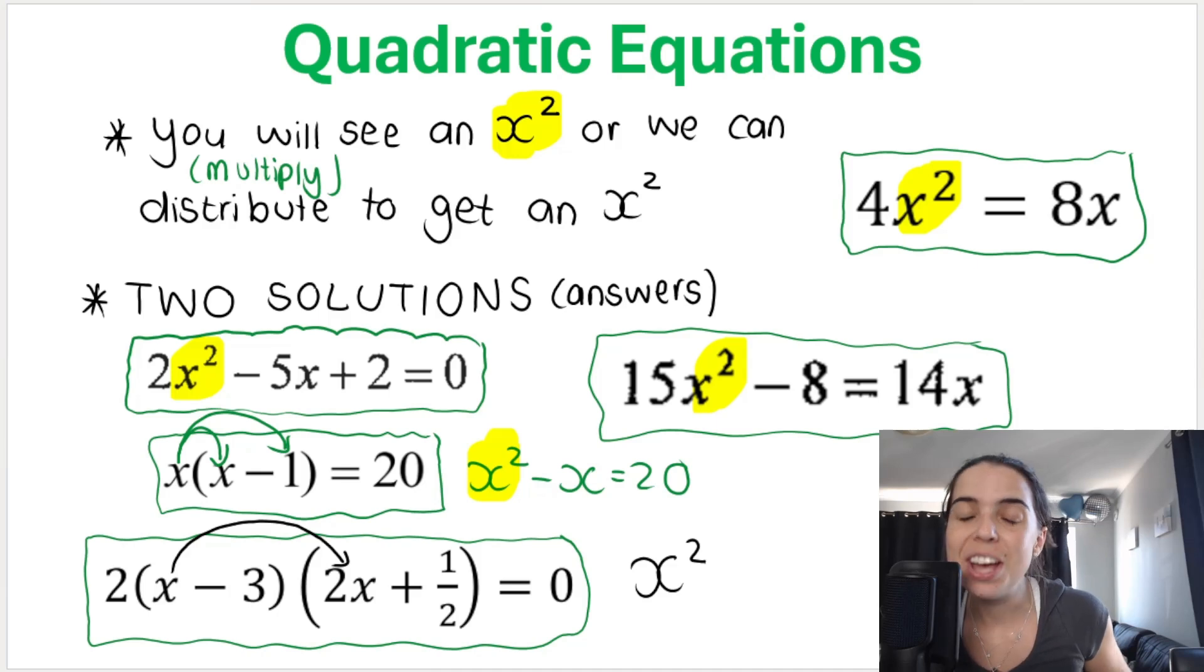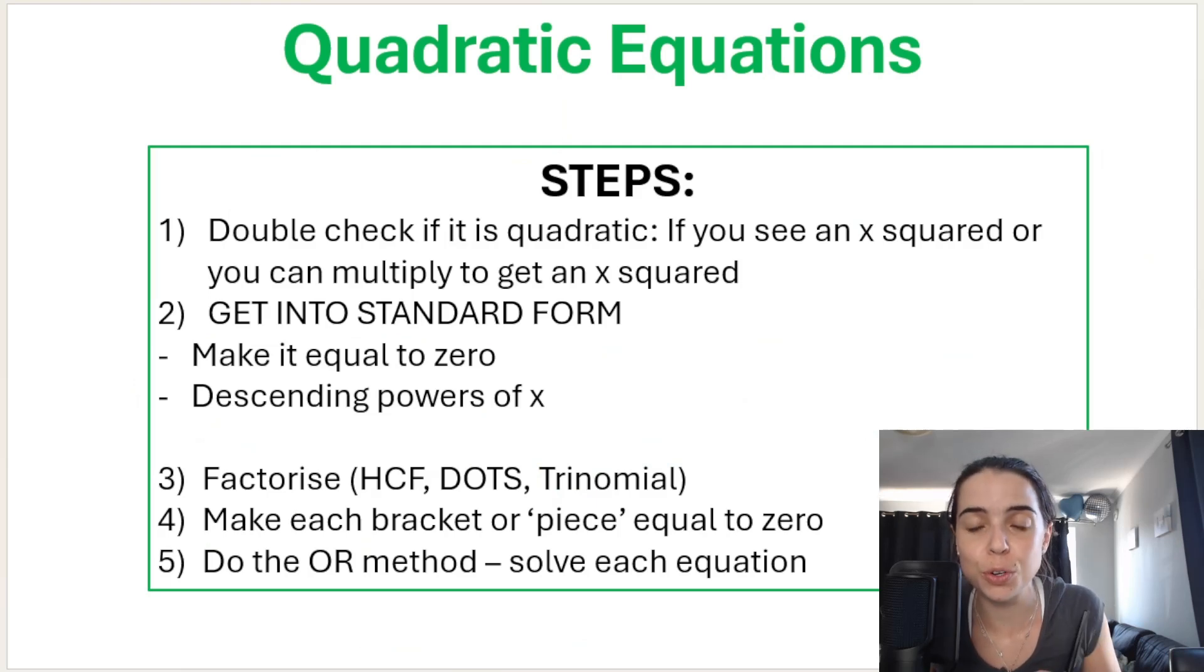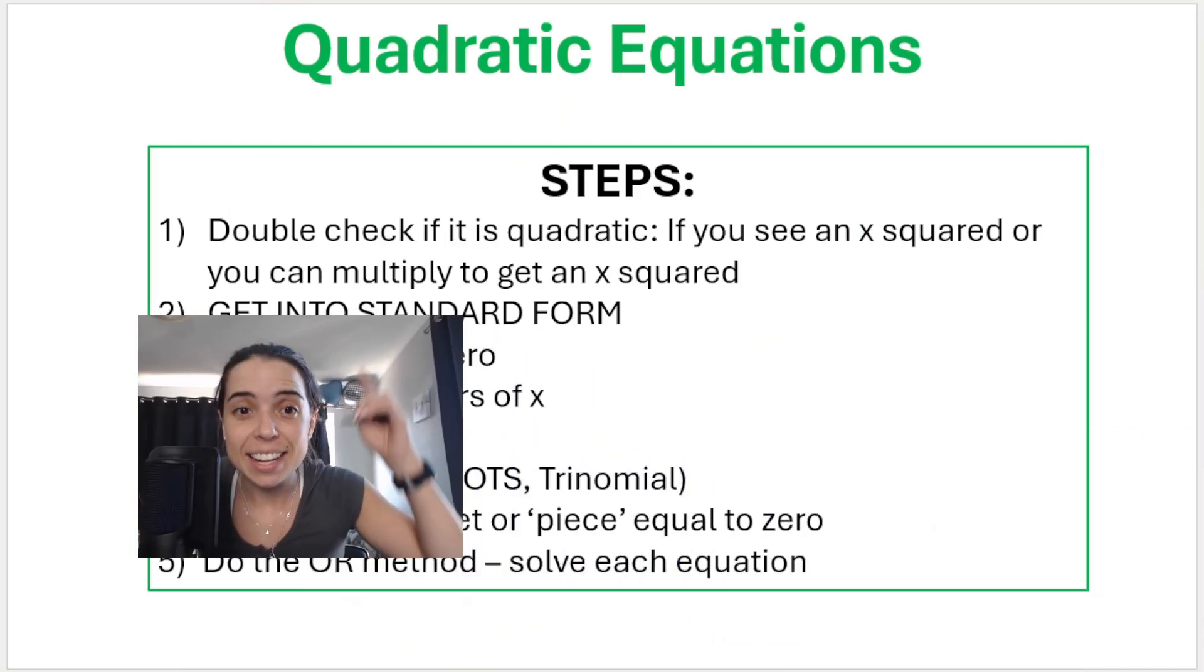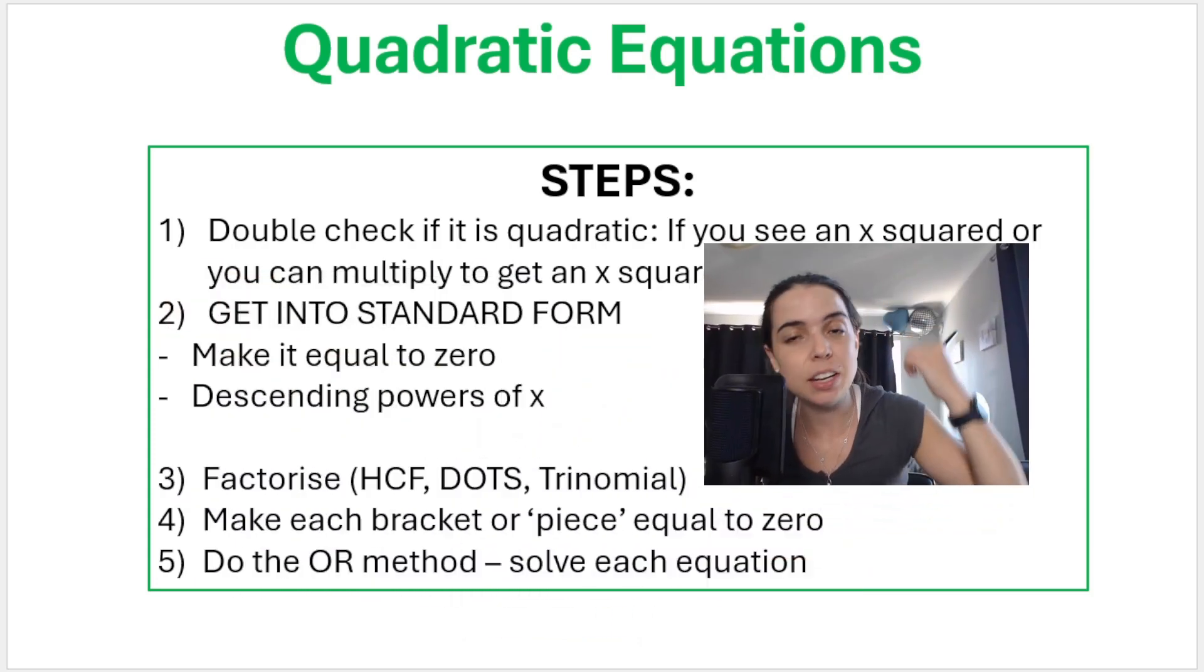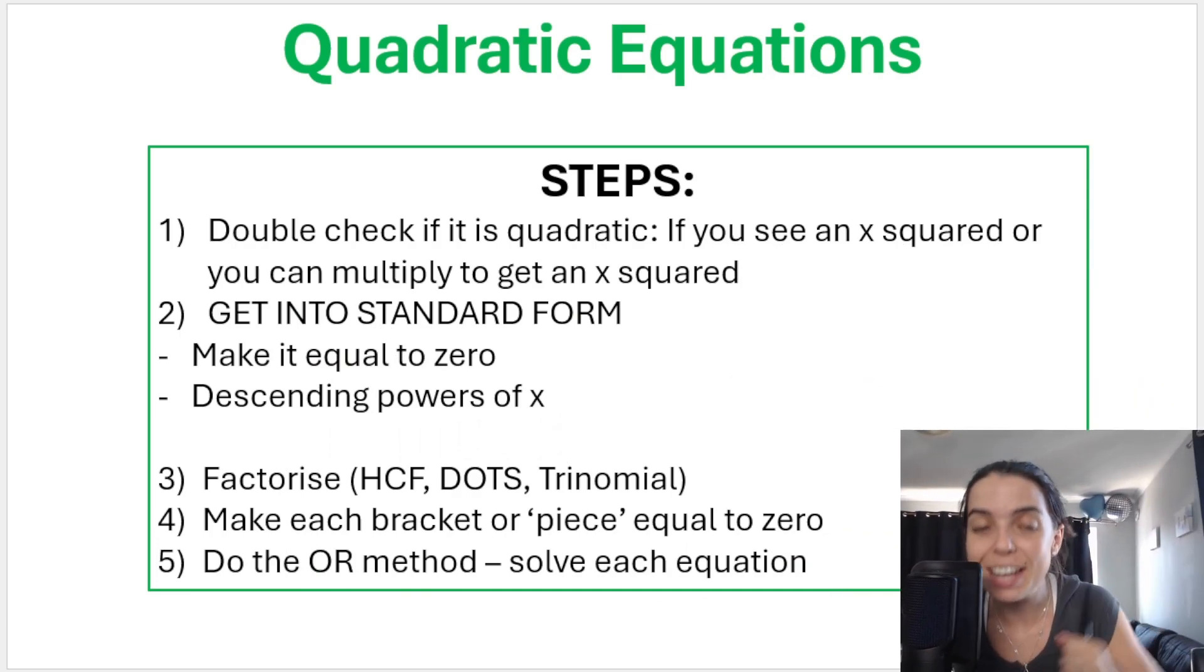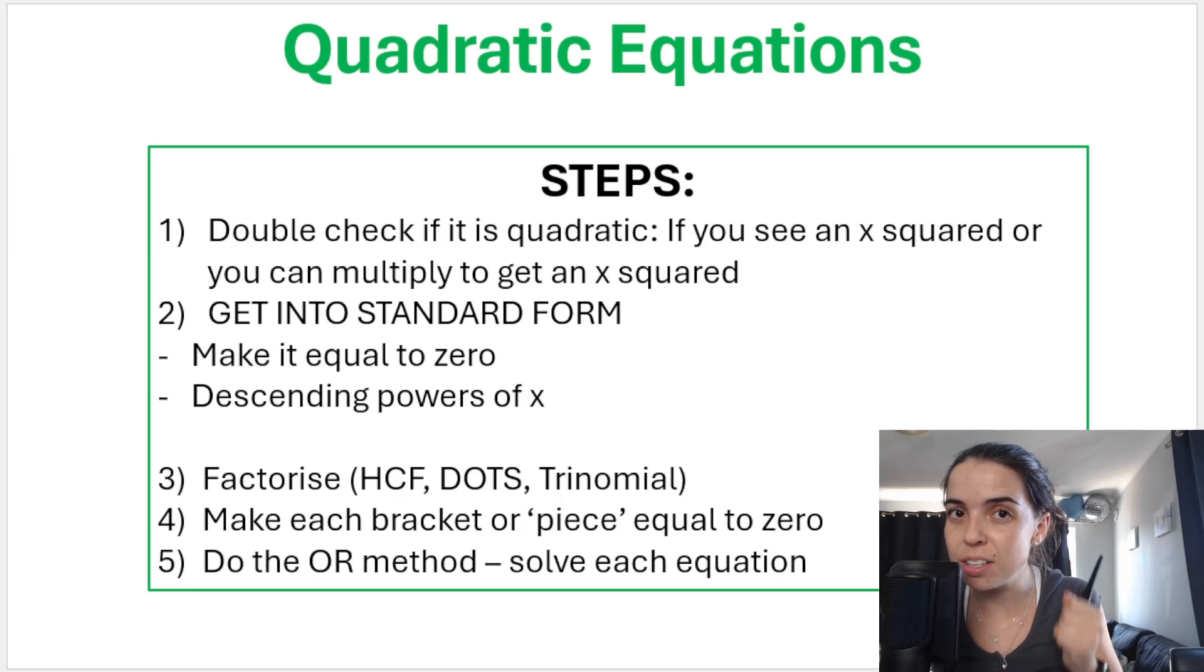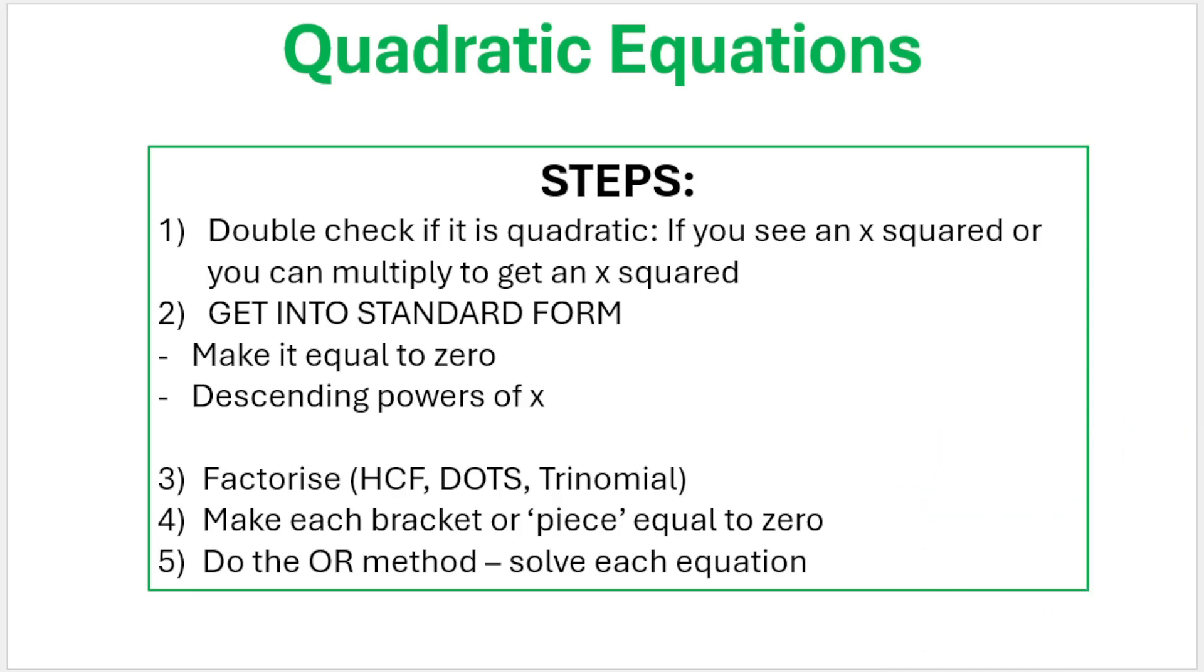Now, this is a type of equation that I know grade 10s and even grade 11s and grade 12s struggle with. What do you do when you have a quadratic equation? The first thing that I want to pop into your brain as soon as you see that it is a quadratic equation is get the equation into standard form. That is the most important first step. Here are my steps. I know I haven't listed that get into standard form as my first step, but my first step is just double check if it's quadratic. So like I said, if you see an x squared or you can multiply to get an x squared, then it is. Then the most important step, get into standard form.